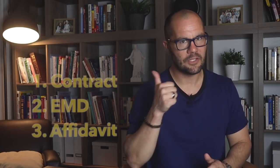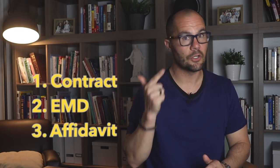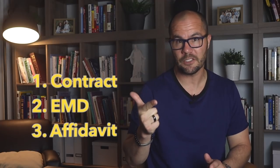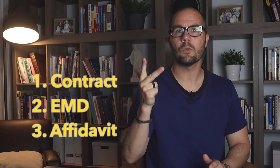Once you open escrow, there are three things you need to provide the escrow agent: your executed contract with the seller, your earnest money if you agreed to pay it, and what's called an affidavit of memorandum — a document that the title company records to protect your interest in the property and prevents the seller from going around you and selling the property to someone else. I did a video explaining how this works and how to get a free copy of this document — link in the description.